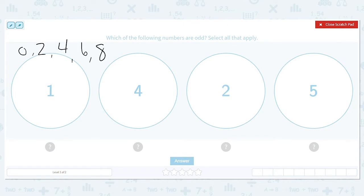Odd Todd likes numbers that end with one, three, five, seven, or nine.